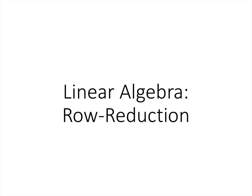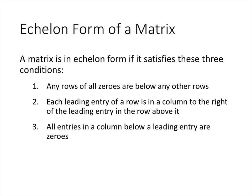In this video we'll talk about row reduction, which is the process of using row operations to put a matrix into echelon form or reduced echelon form. First let's remind ourselves what it means for a matrix to be in echelon form. We have three conditions: all rows of all zeros must be below any other rows; each leading entry of a row must be in a column to the right of the leading entry of the row above it; and all entries in a column below a leading entry must be zeros.